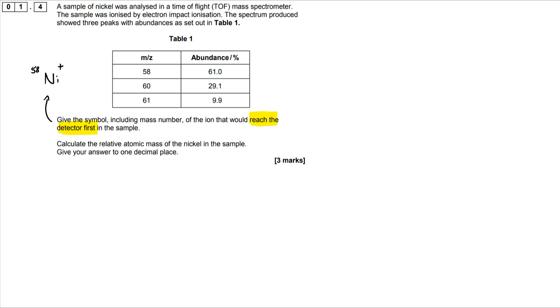Moving on to the actual calculation here, this is a relatively straightforward example of this type of question. What is the relative atomic mass of nickel based on the abundance of these three isotopes? So you will do the calculation as you can see here. It's 58 times 61 over 100 because it's 61 percent is the m/z 58, 60 times 29.1 over 100 plus 61 times 9.9 over 100.